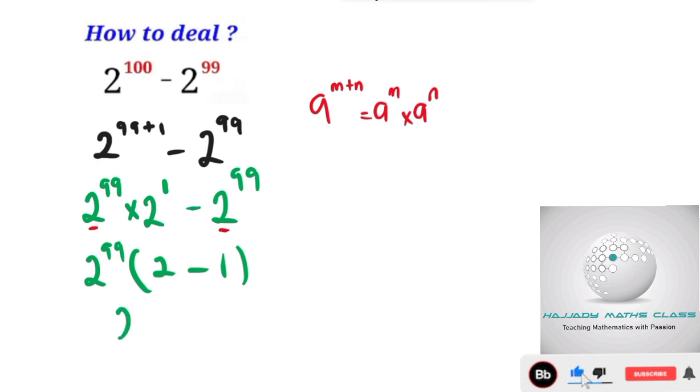So with this, we have 2 to the power of 99 multiplied by 1, which is the same thing as 2 to the power of 99.